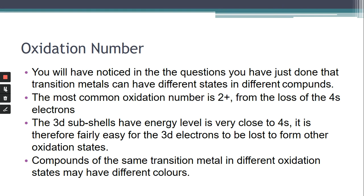Overall, the most common oxidation number we come across is two positive. Why would that be? Iron two positive, for example. We need to think about what's lost first. First of all, we lose those two 4s electrons. It's easy — you wouldn't want to just lose one because that puts an instability in the 4s subshell. So it loses those first; therefore the most common oxidation number is two positive.